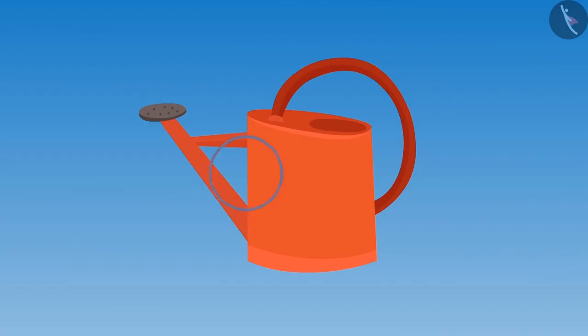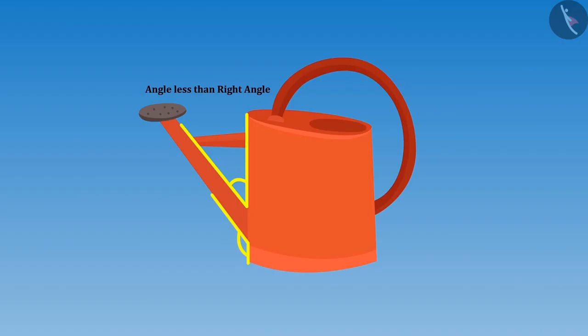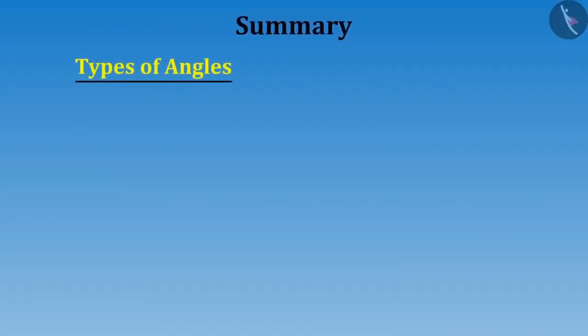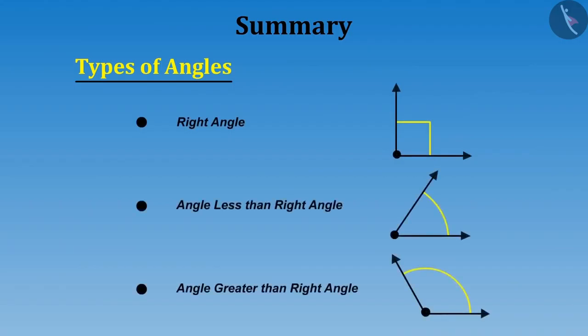She told Riva, do you know which angle is made in this watering can? You can pause the video if you want and give it some thought. Look here. If we look at this corner carefully, we can see two lines joining together. Didi, this is less than the right angle. But if we look below this pipe, we can see an angle here, and I think this is greater than a right angle. Yes, you identified it correctly, Riva. There is an angle less than a right angle and an angle greater than a right angle in this can.